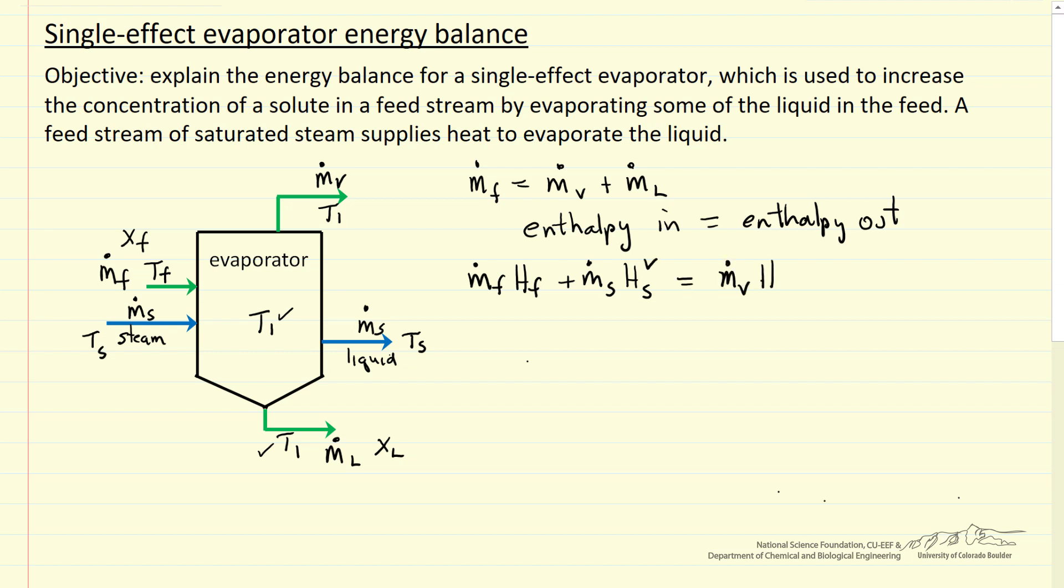Leaving, we have mass flow rate of vapor times the enthalpy of the vapor, and we have the mass flow rate of steam times the enthalpy of the condensate. It's the same mass flow rate but it's liquid leaving. Then we have the mass flow rate of the concentrated liquid and its enthalpy.